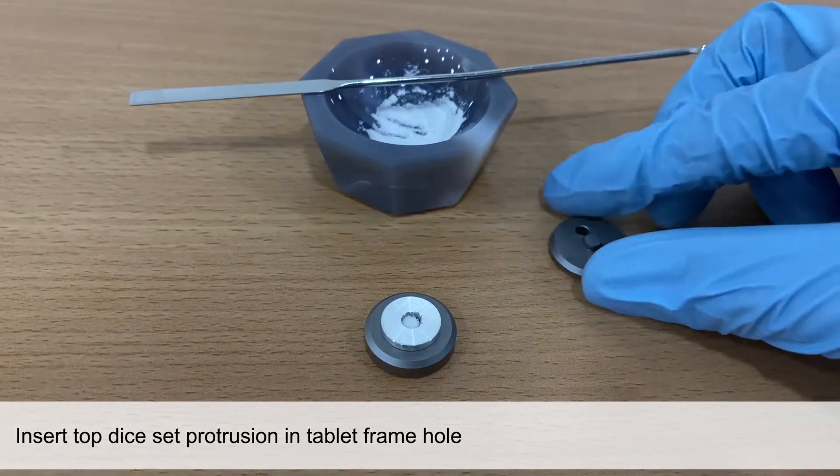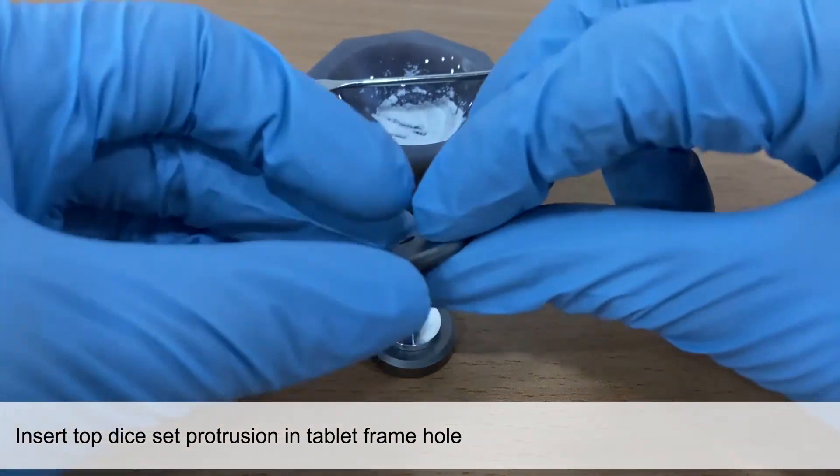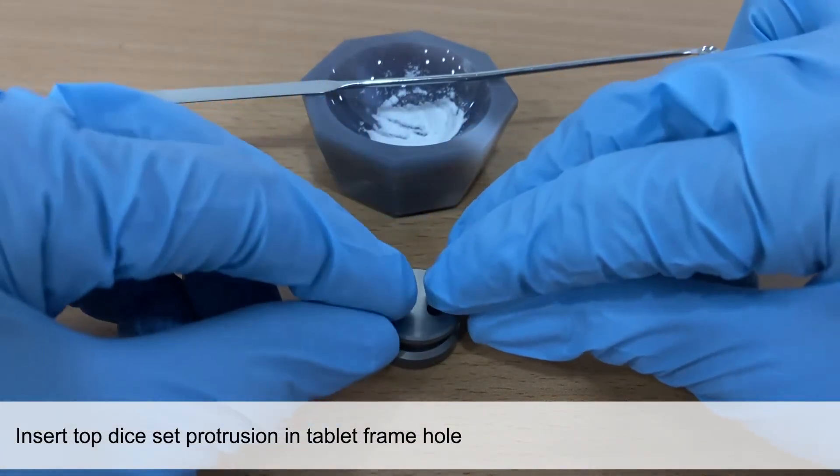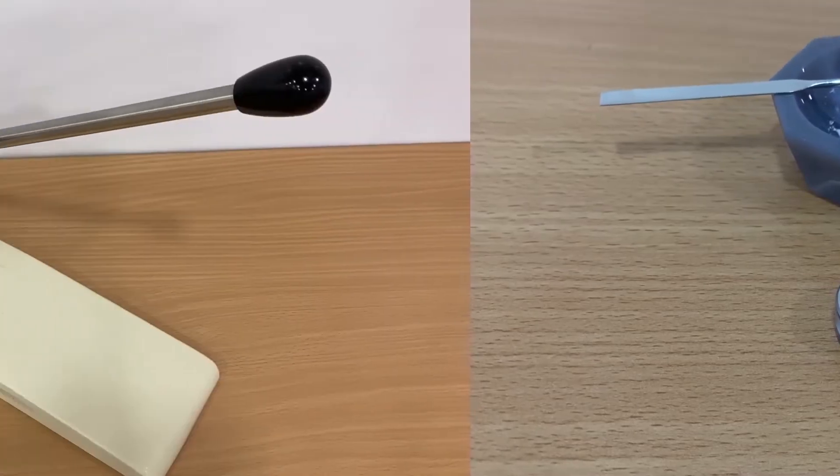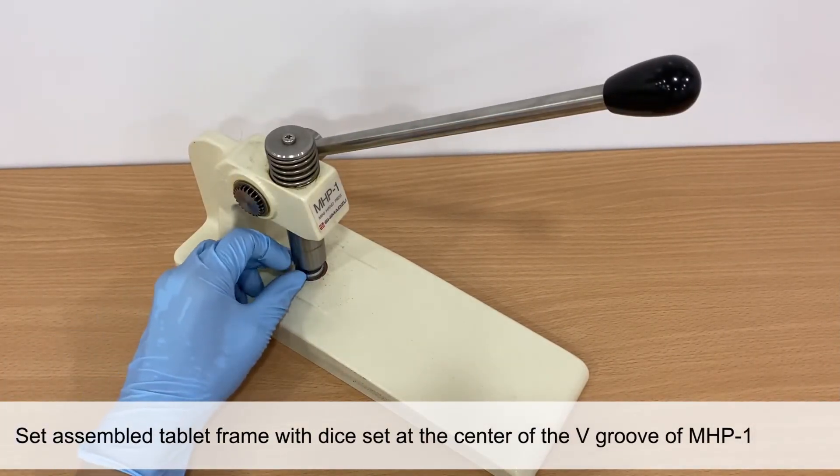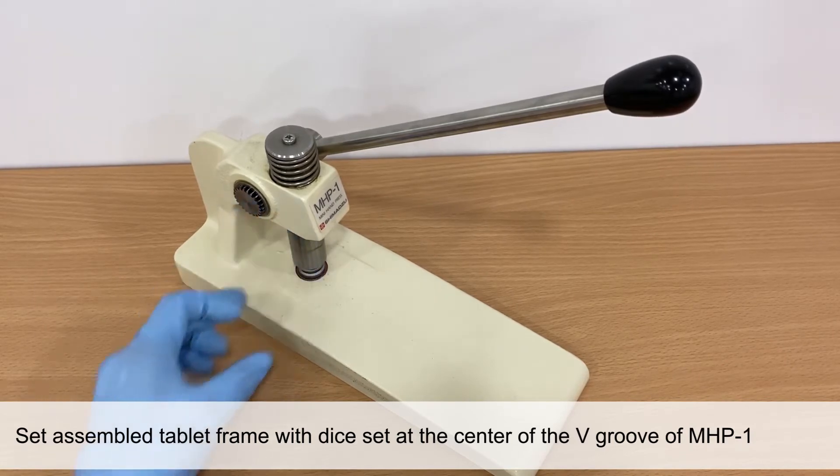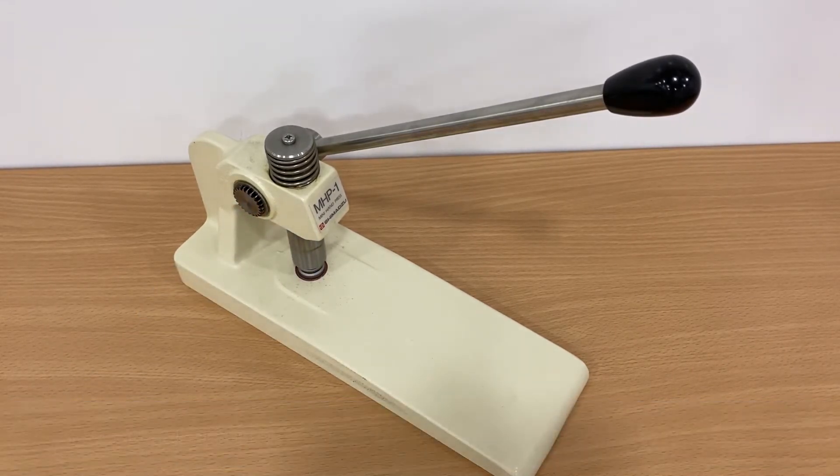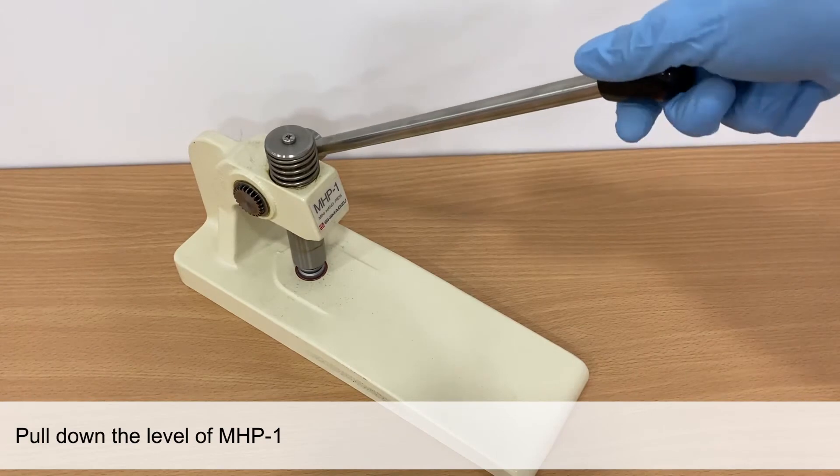Then, insert the top dice set protrusion in the tablet frame hole. Set the assembled tablet frame with dice set at the center of the V-groove of the mini hand press. Pull down the lever to press onto the dice set.